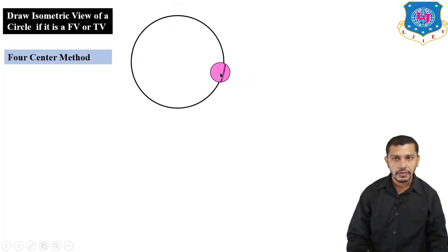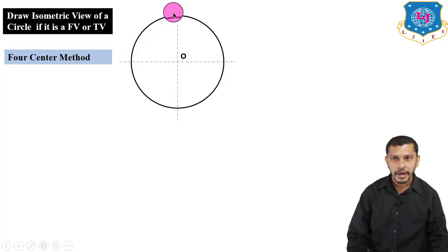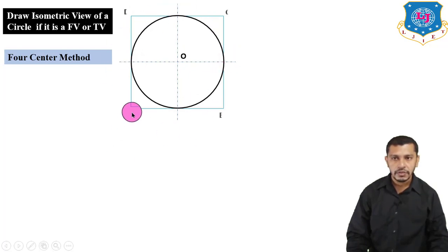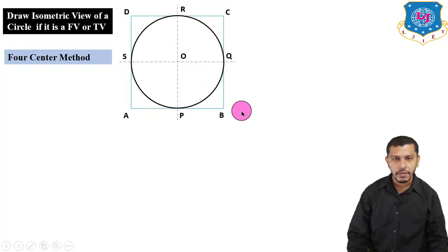To draw the isometric view of a circle, first mark the center and draw the horizontal and vertical diameters — the centerlines. From these points, draw a square passing through these points of the circle. This square is ABCD with midpoints PQRS. Mark these points on the given circle, then draw the isometric view of the square, which in isometric view becomes a rhombus.